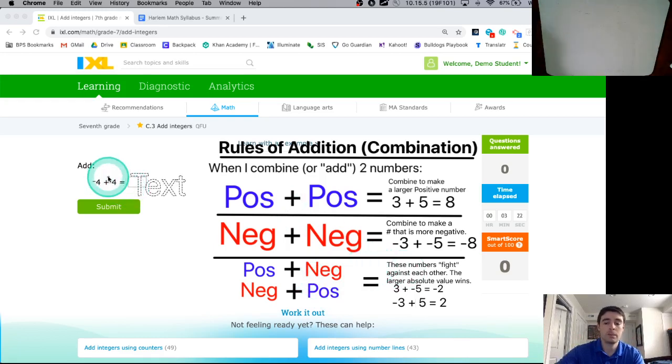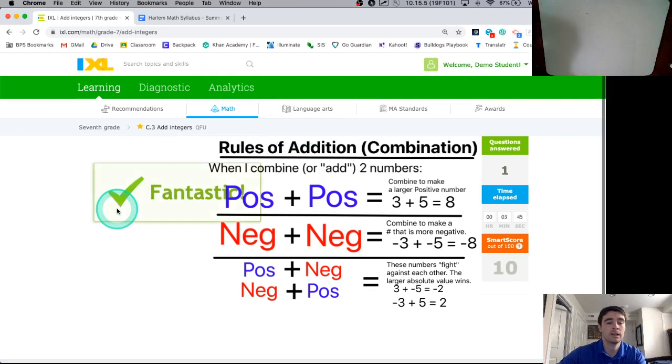Our first example here says add negative 4 plus 4. Sometimes when we combine a positive with a negative, or in this case, a negative with a positive, if they have the same absolute value, negative 4 and positive 4, that's like borrowing $4 and paying $4 back. They're going to cancel each other out. They're total opposites. They get us back to zero.